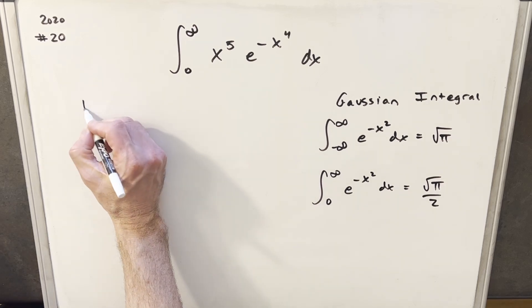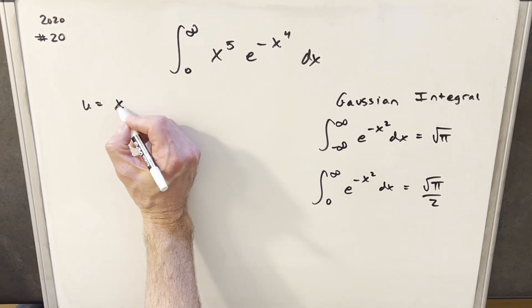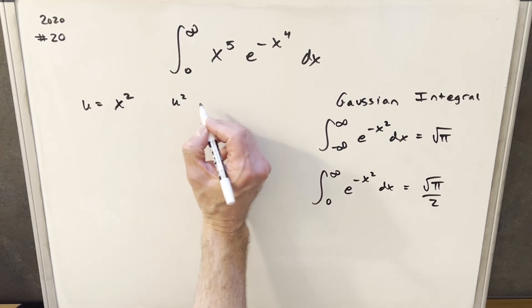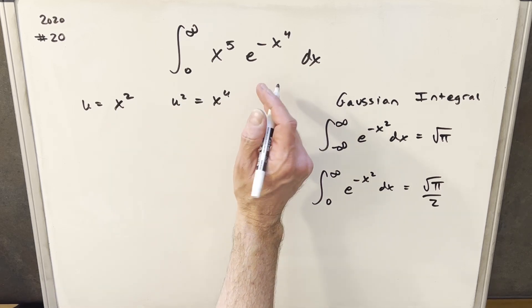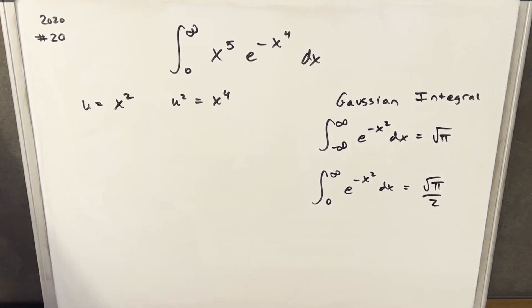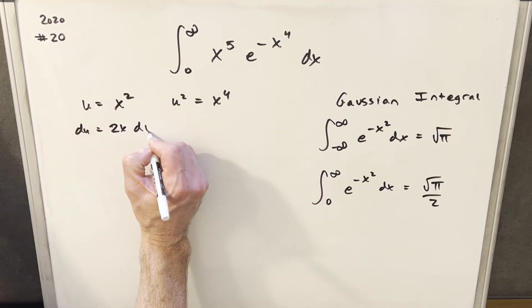So to start what I want to do is make a u substitution. I'm gonna call my u equal to x squared. Just noticing that if I do that, u squared is gonna be our x to the fourth. So we got a nice substitution for our exponent there. So now we'll take a derivative and for du we're gonna have 2x dx.